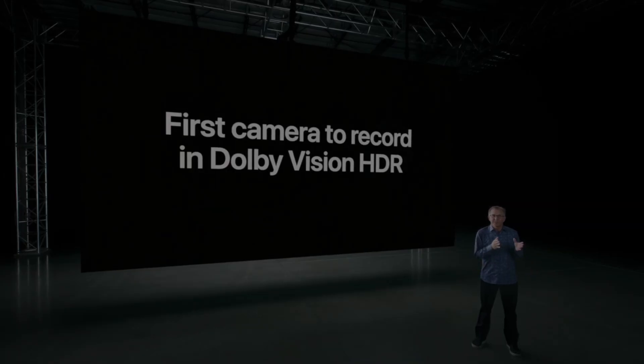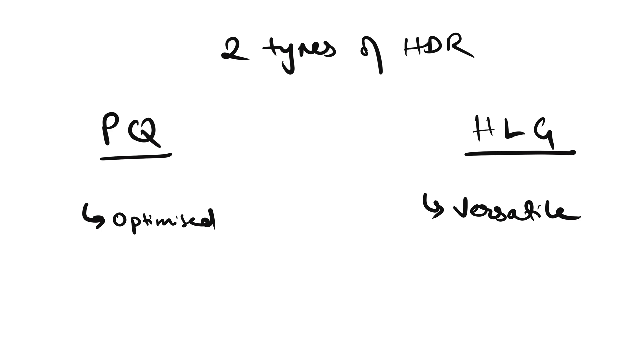Let's get back to the technicalities of HDR. The most interesting thing that stuck out to me when the iPhone 12's HDR Dolby Vision recording was announced is that technically you cannot record instantly in HDR — no movie production, no Hollywood studio does that. They capture in a raw or log format and then convert and color grade into HDR 10 or Dolby Vision. This brings us back to two types of transfer functions: PQ and HLG. Simply put, PQ is a more optimized format and HLG is a more versatile format. Dolby Vision and HDR 10 are based on PQ — that's the industry de facto standard.